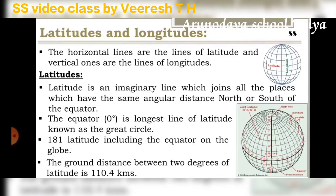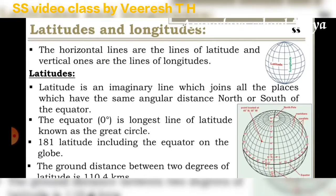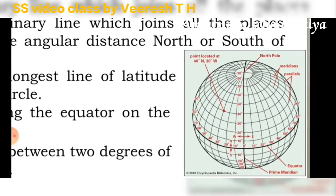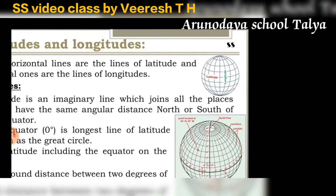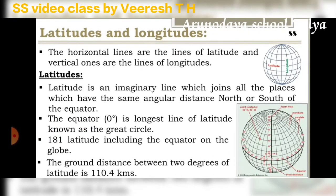How many latitudes are there on Earth? There are 181 latitudes in total — 90 latitudes north of the equator, 90 south, plus the equator itself at zero degrees, making 181 latitudes altogether.